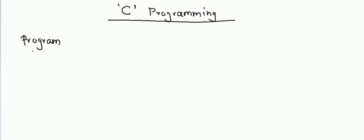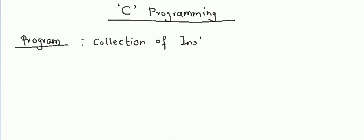The first concept is: what is a program? A program is a collection of instructions. Now, what are instructions? Instead of instructions you can also say it is a collection of commands. Commands are various orders that are generally given to the computer, and the computer performs according to those commands.